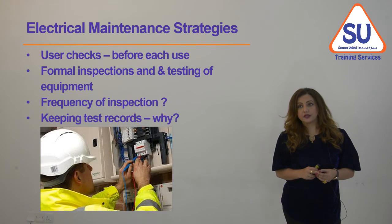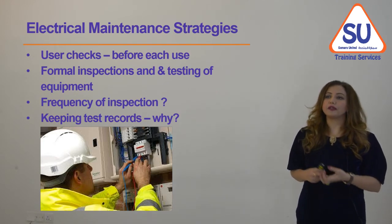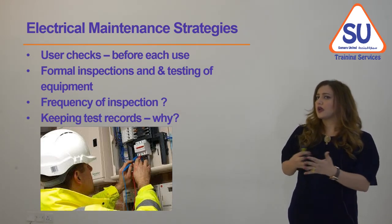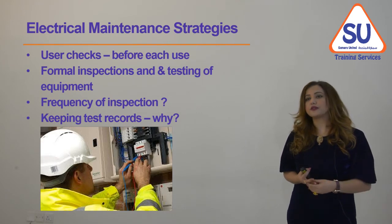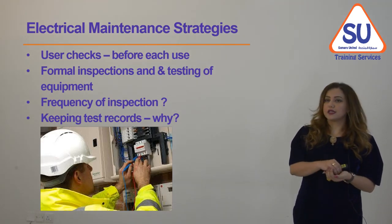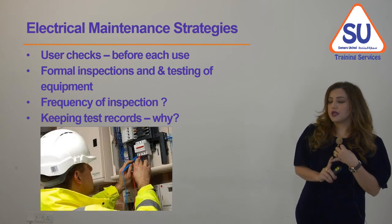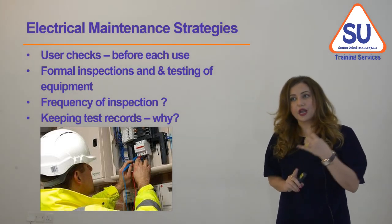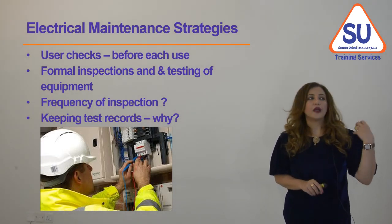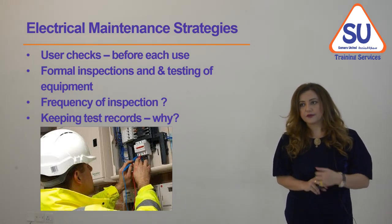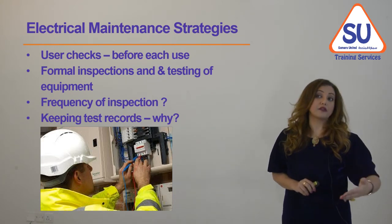Regarding electrical maintenance strategies, we need the user to check the equipment before each use and preferably after use as well. Formal inspection and testing must also be conducted by a competent person. How frequently formal inspections should occur can only be determined by reading the manufacturer's manual and guidance, taking into account the atmosphere in which the equipment is used, the frequency of use, and the load placed on the equipment — these factors may shorten the inspection interval from six months to three months or less.